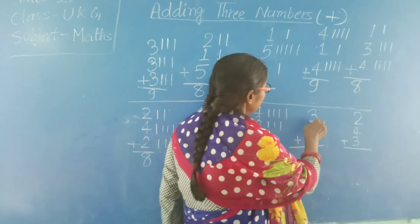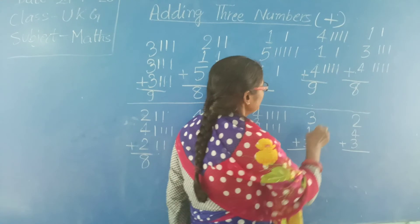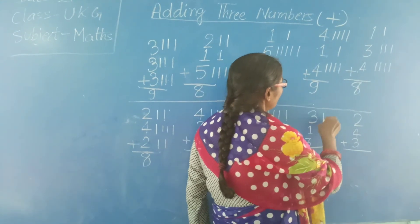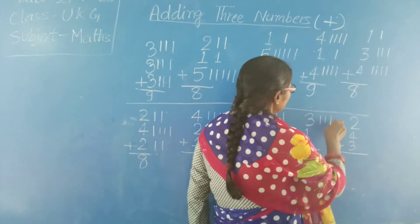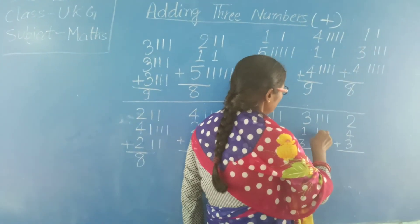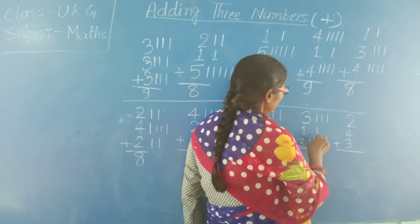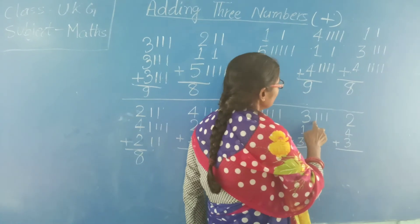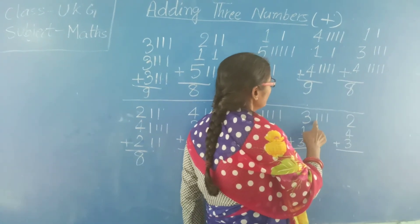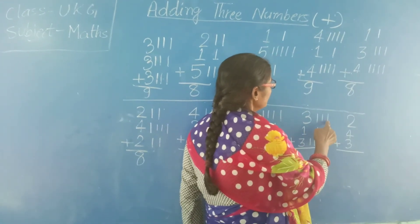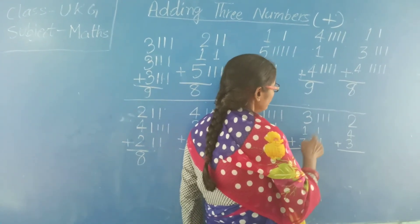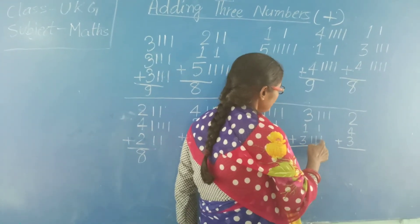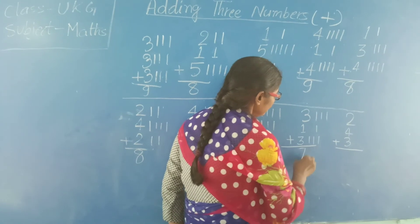Next: 3, 1, 3. Draw 3 lines: 1, 2, 3. Then 1 line. Then 3 lines: 1, 2, 3. Count all together: 1, 2, 3, 4, 5, 6, 7. The answer is 7.